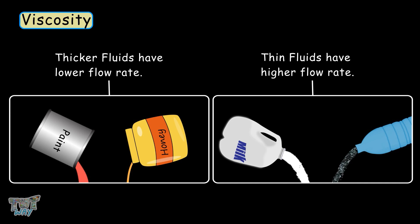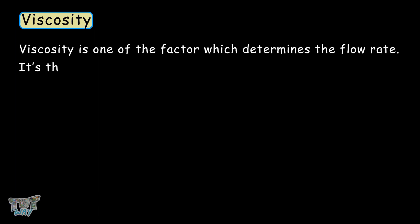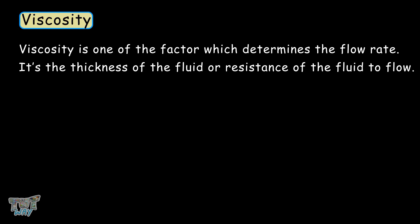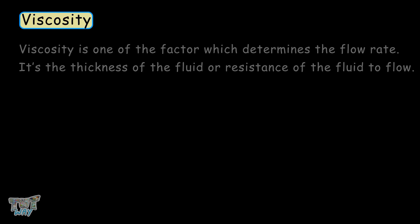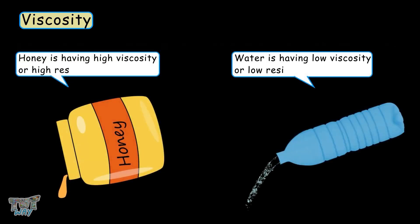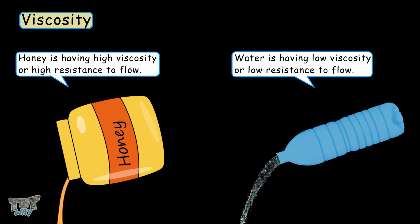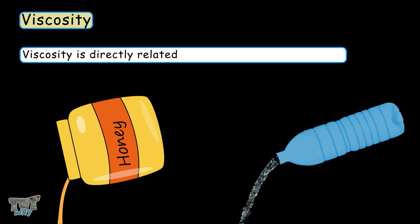What exactly is viscosity? It is one of the factors which determines the flow rate. It is the thickness of a fluid or the resistance of the fluid to flow. For example, honey has a high viscosity or high resistance to flow, and water has a low viscosity or low resistance to flow. So viscosity is directly related to the thickness of the fluid.